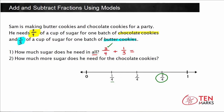1 fourth is less than 1 third, which means 1 third falls to the right of 1 fourth on the number line. The next benchmark is 2 fourths, which is greater than 1 third, so 1 third falls somewhere between these two benchmarks. For the low estimate: 3 fourths plus 1 fourth equals 4 fourths, which simplifies to 1. So the low estimate is 1 cup of sugar in all.